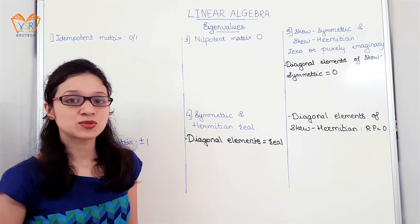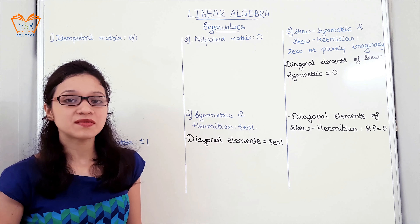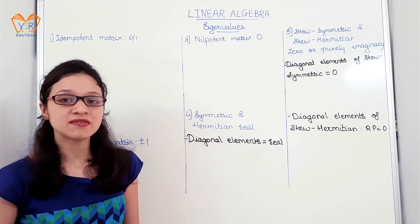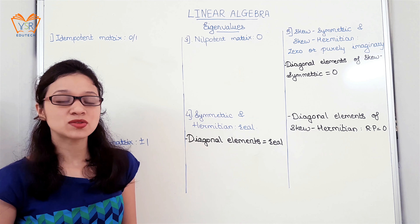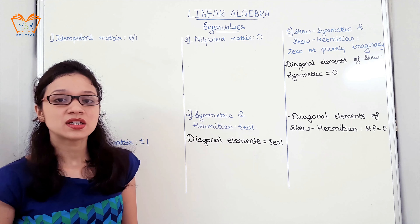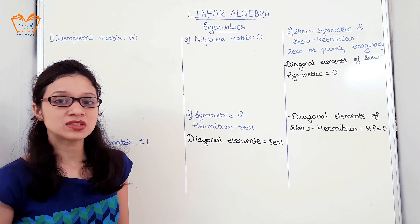Hi guys, I am Suprava. In the properties of eigenvalues we had seen that there are predefined eigenvalues for various square matrices. In this video we will see the proof for each one.